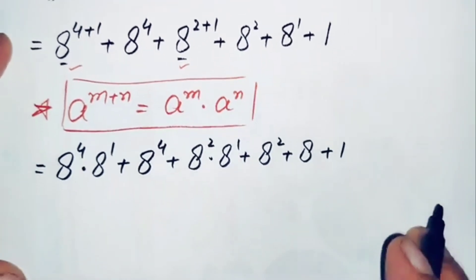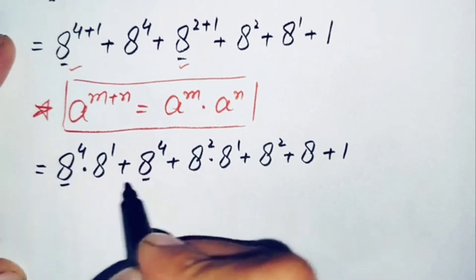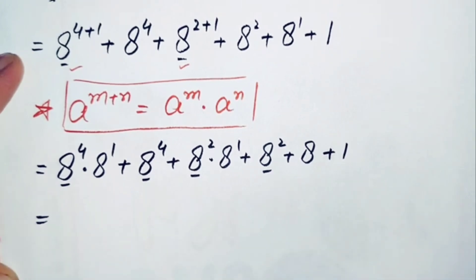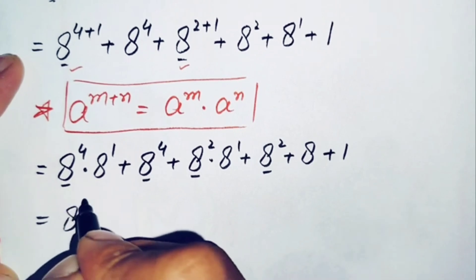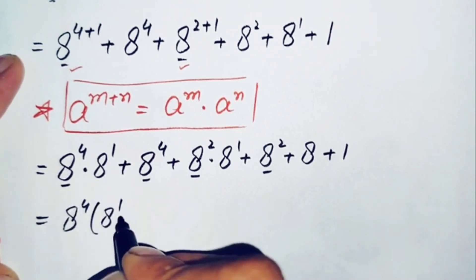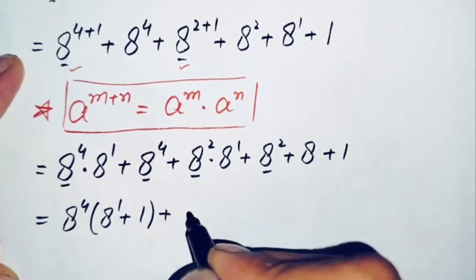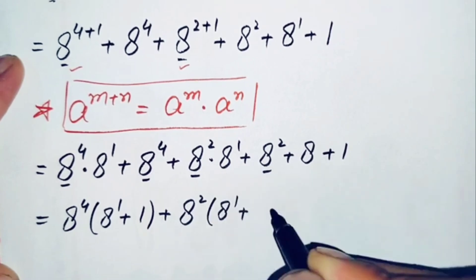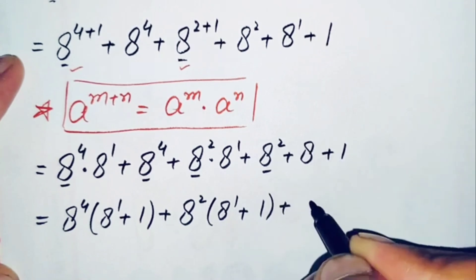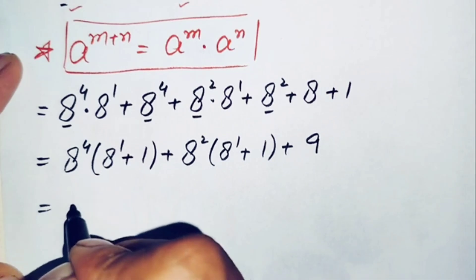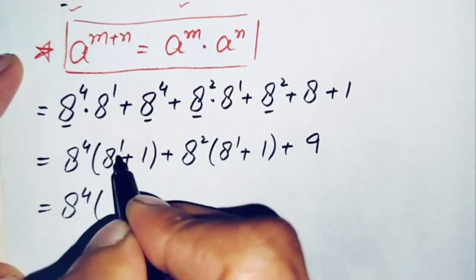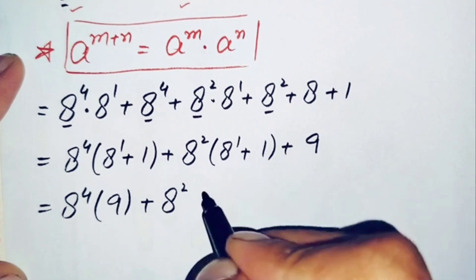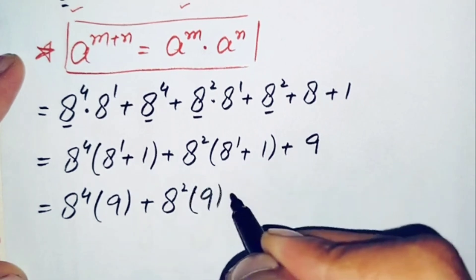Now in this step we will take a raised to power 4 common from the first two terms, and a raised to power 2 common from the third and fourth terms. So the equation becomes: a raised to power 4 times (a raised to power 1 plus 1), plus a raised to power 2 times (a raised to power 1 plus 1). Since a equals 8, a raised to power 1 is 8, so 8 plus 1 is 9.